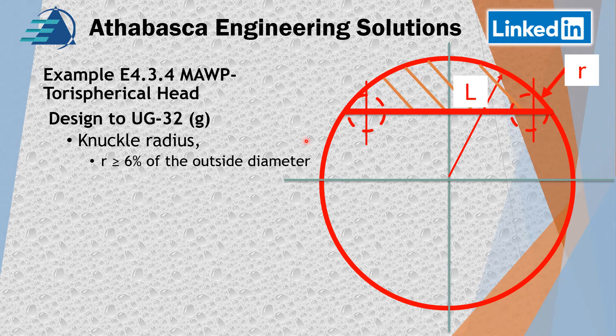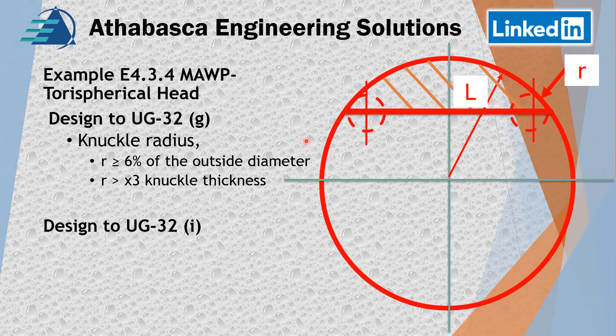The code states that R has to be greater than or equal to 6% of the outside diameter of the vessel to which the head is attached. Then it says R has to be at least three times greater than the knuckle thickness. Those are the basic rules. If you follow those, then you can follow all the Division 1 rules, and it's a lot simpler.